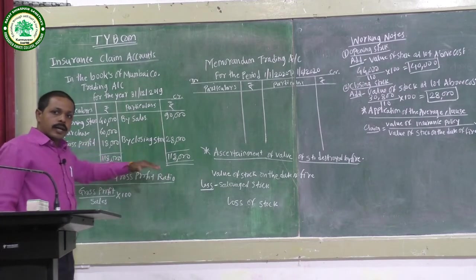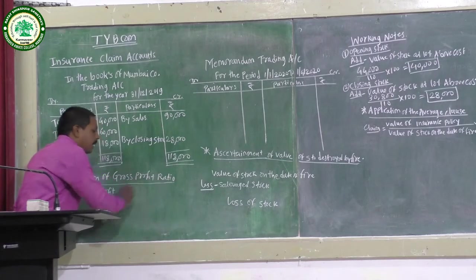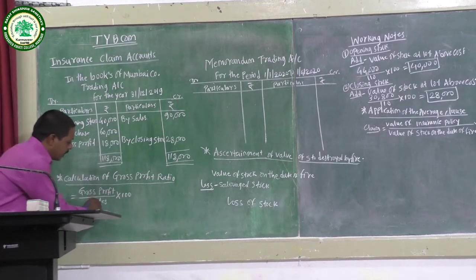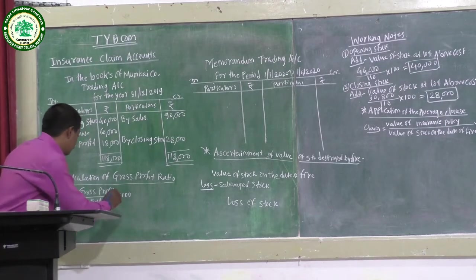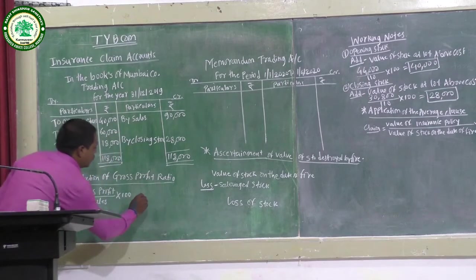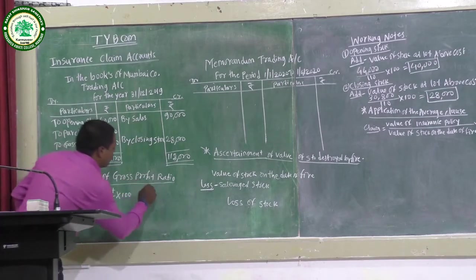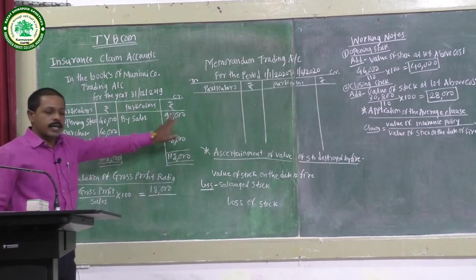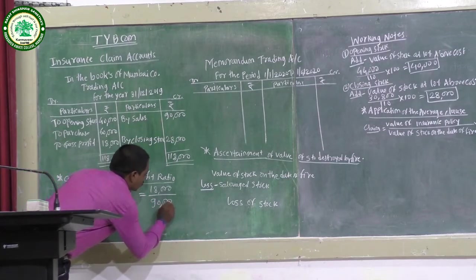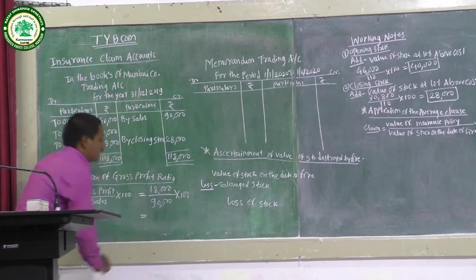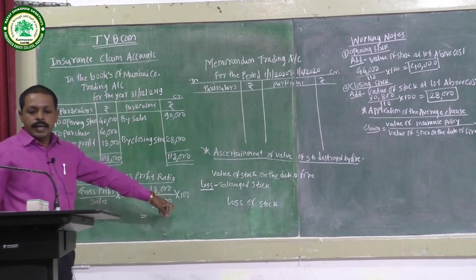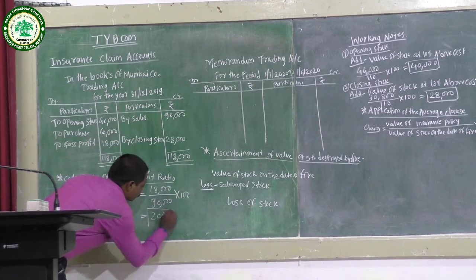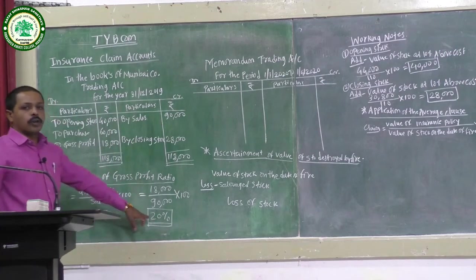Next, we calculate the gross profit rate using the formula: Gross Profit / Sales × 100. That is Rs.18,000 divided by Rs.90,000 × 100 = 20%. So the gross profit rate is 20%.